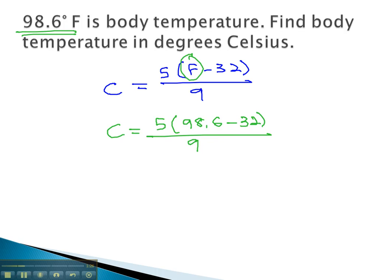And it's order of operations from here. We know we have to do the parentheses first, so 98.6 minus 32 is 66.6. 5 times 66.6 over 9. Finishing out the numerator, because we have to simplify the numerator before we divide. 66.6 times 5 is 333 over 9.